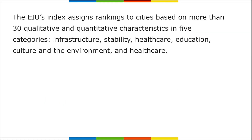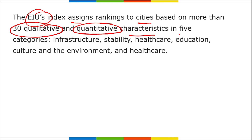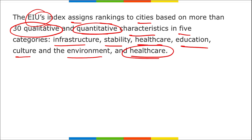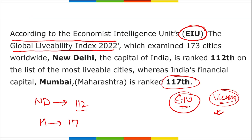The EIU's index assigns rankings to cities based on more than 30 qualitative and quantitative characteristics across five categories: infrastructure, stability, healthcare, education, and culture and environment. The top five cities are: Vienna, Copenhagen, Zurich, Calgary, and Vancouver.